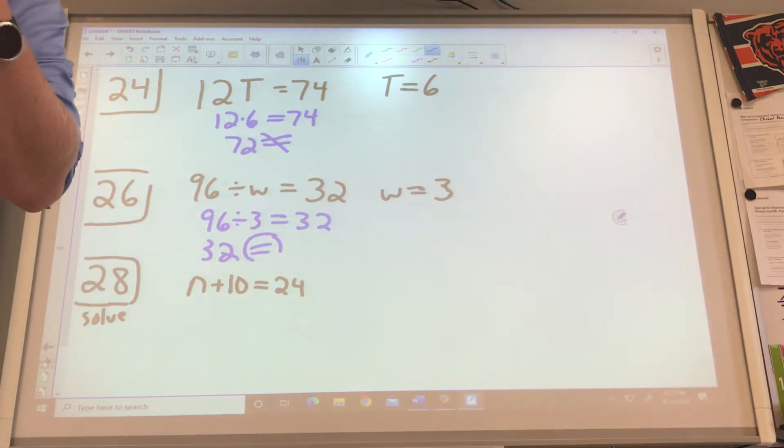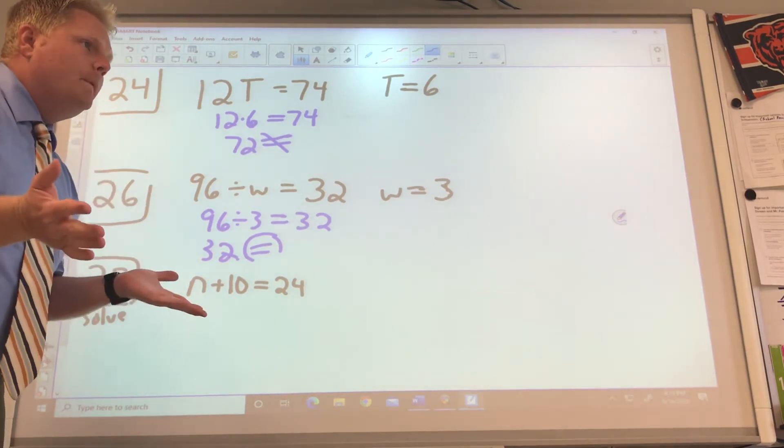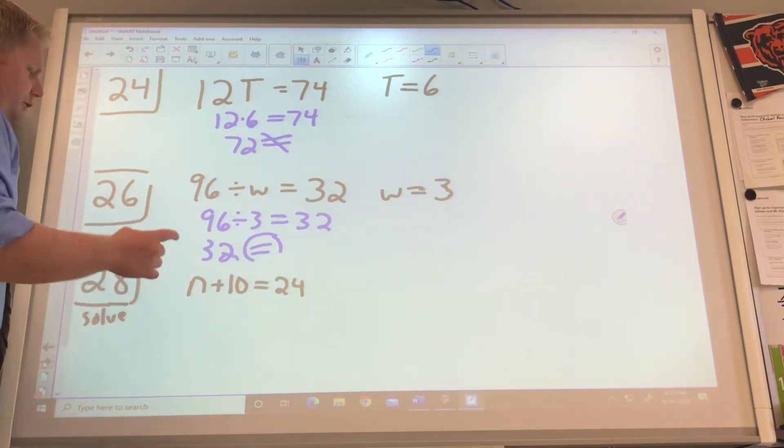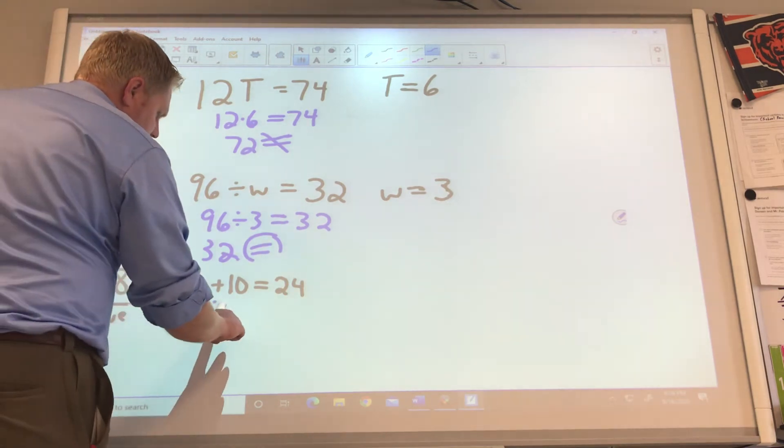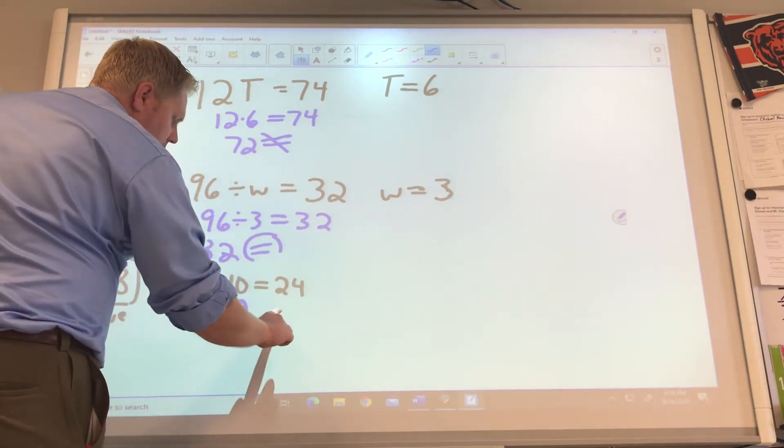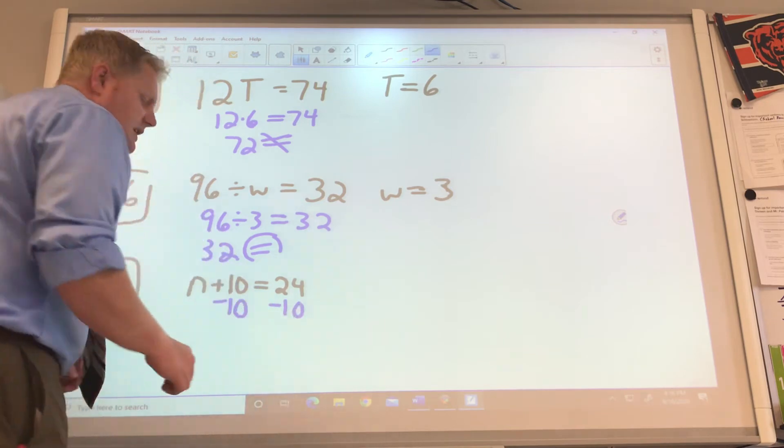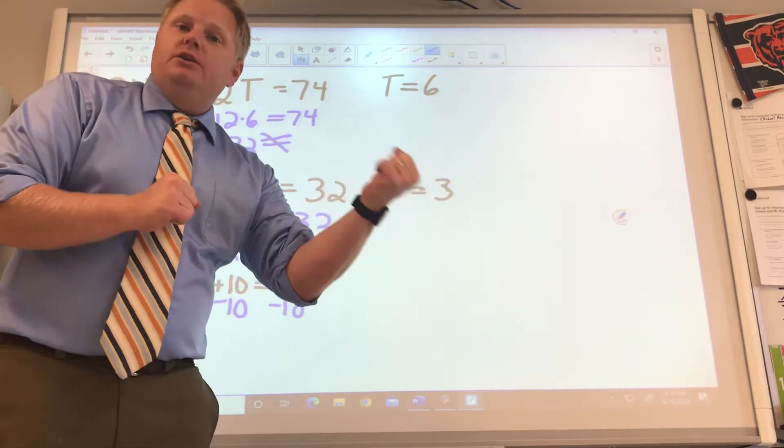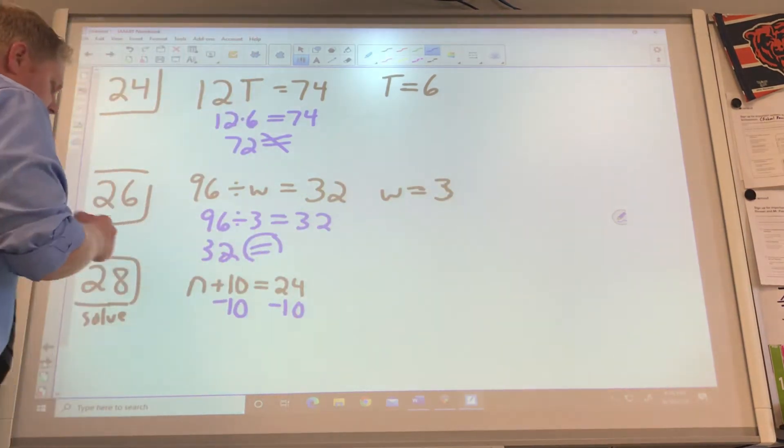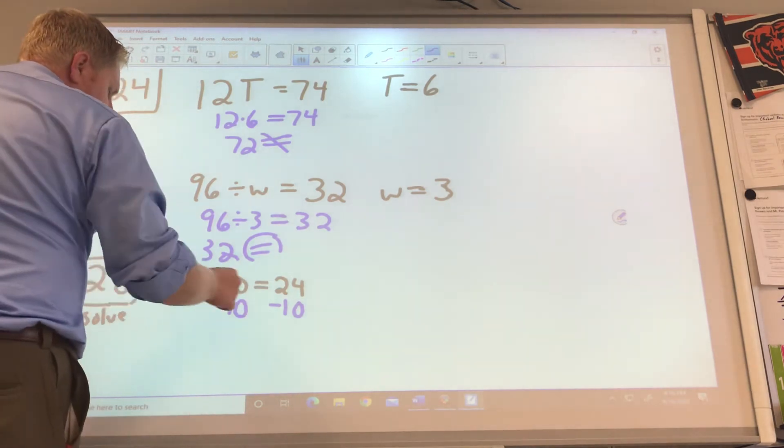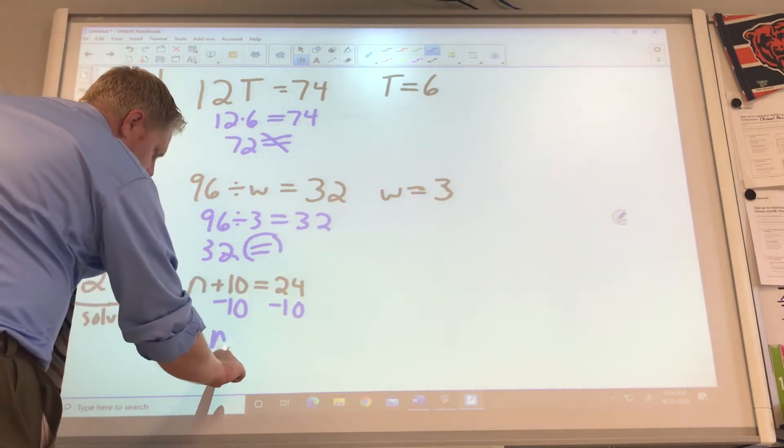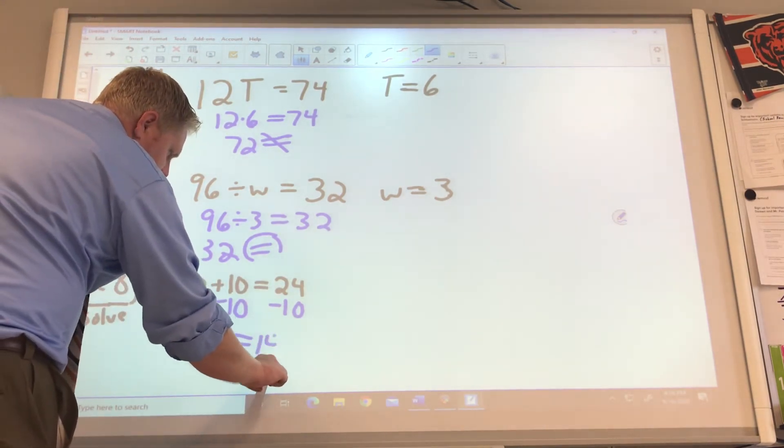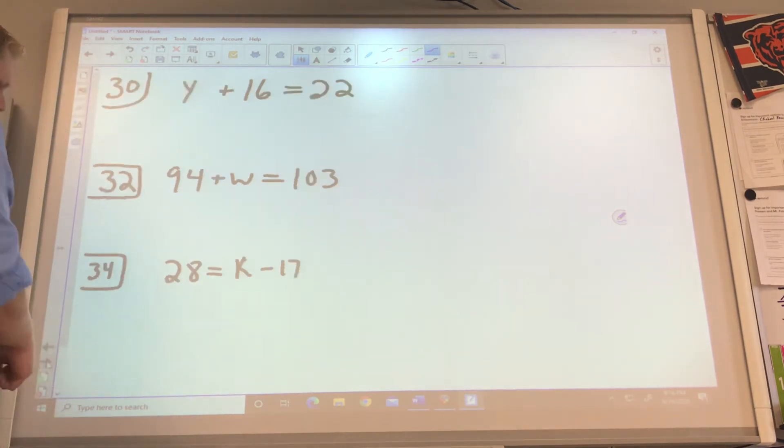Now they start the solving process. We start with addition. Inverse of addition is, hopefully you said subtraction. So if I want to get N all by itself, I subtract 10. I subtract 10 to this other side to keep that scale balanced, right? Do it to one side, do it to the other side. So from there we go. N equals 14. 14 plus 10 is 24. Skiddly doo.